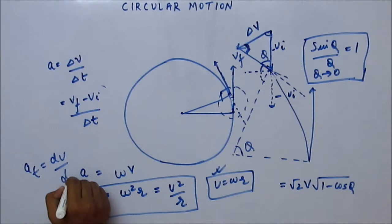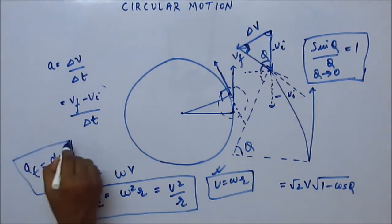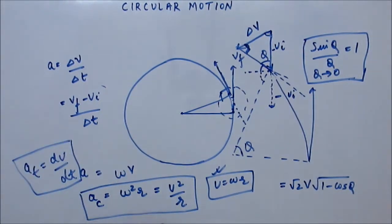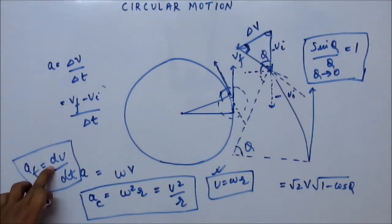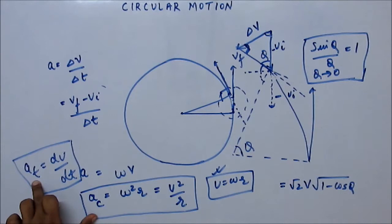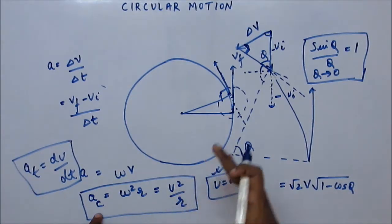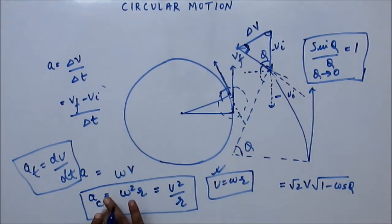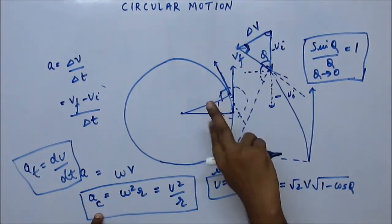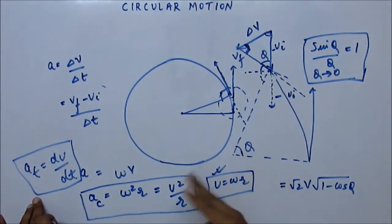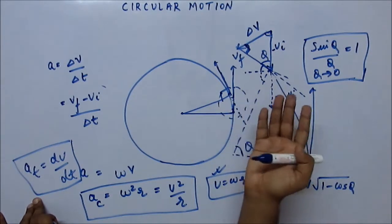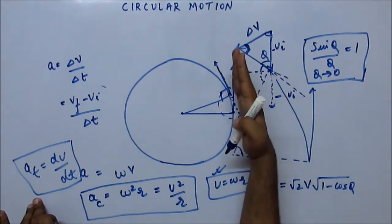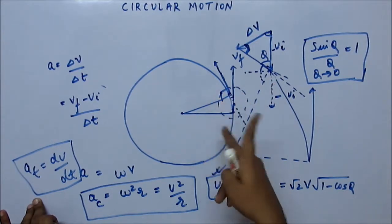You can write tangential acceleration at as dv/dt. So there are two accelerations: centripetal acceleration ω²r or v²/r, and tangential acceleration responsible for increasing or decreasing the speed. Tangential acceleration is along the tangent and centripetal acceleration is along the radius — both are perpendicular to each other. In circular motion you will be breaking acceleration along the tangent and along the radius.